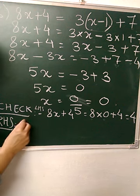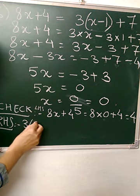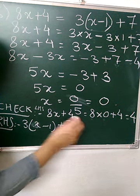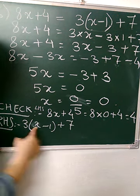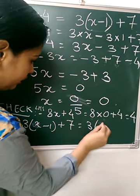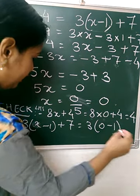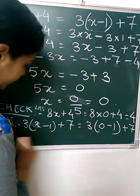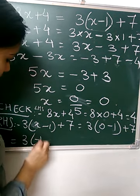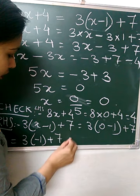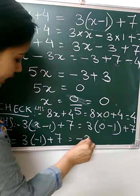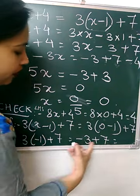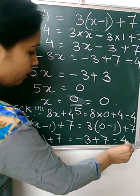RHS: 3 into (x minus 1) plus 7. Now here we will put 0. So 3 into (0 minus 1) plus 7. 0 minus 1 will be minus 1 only. So 3 into minus 1 plus 7. That is 3 ones are 3, so minus 3 plus 7. Plus minus is minus, so 7 minus 3 is 4.